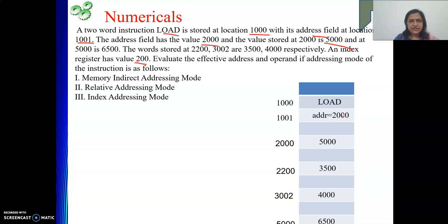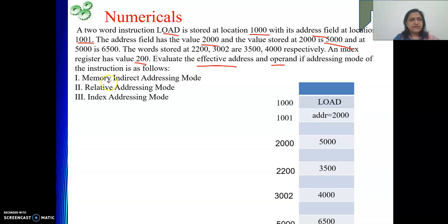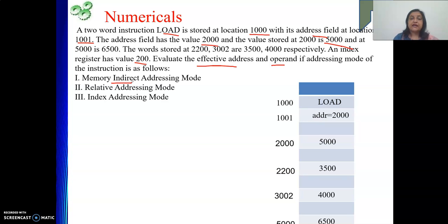Now let's start. The question is: evaluate the effective address and operand. I need to tell both — what is the operand, meaning the content of the effective address, and what is the effective address. To recap: the address field contains the address of the EA in indirect mode, contains the EA in direct mode, contains the offset in index and relative mode, and contains the data in immediate mode.